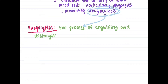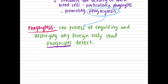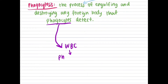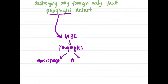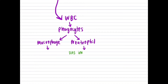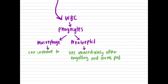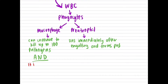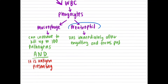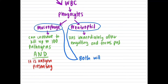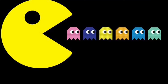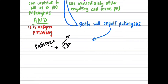Phagocytosis involves phagocytes engulfing and destroying any foreign body they detect. Phagocytes are white blood cells which include macrophages and neutrophils. Both can complete phagocytosis; however, the neutrophil dies immediately after engulfing and forms pus, while the macrophage can continue to kill up to 100 pathogens and is also involved in the third line of defense since it is antigen-presenting. When a phagocyte detects a foreign body, it engulfs the pathogen and breaks it down using enzymes in the lysosome organelle — think of a Pac-Man eating ghosts.